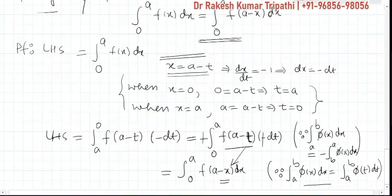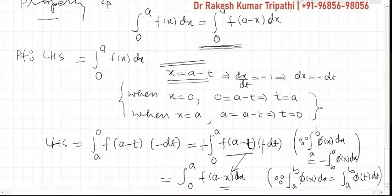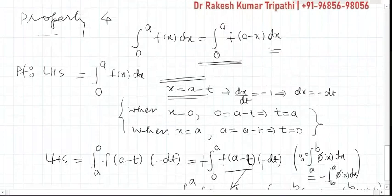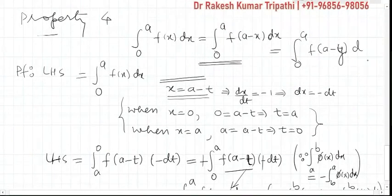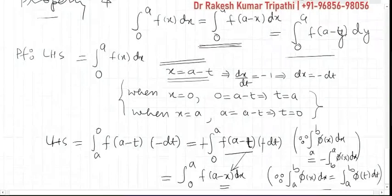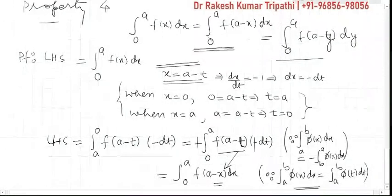Because definite integrals are independent of variables. So whether you write it, right hand side, 0 to a f of a minus x dx, or 0 to a f of a minus t dt, or f of a minus y dy, no matter. All are same. So this was all about this property. I hope the property is clear.